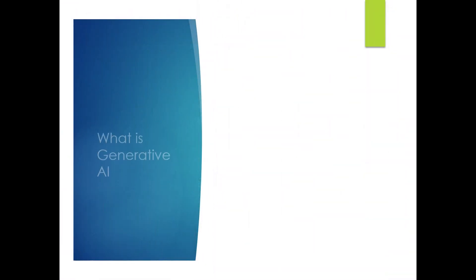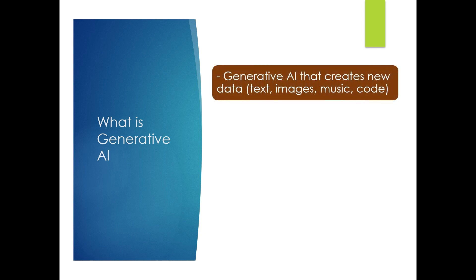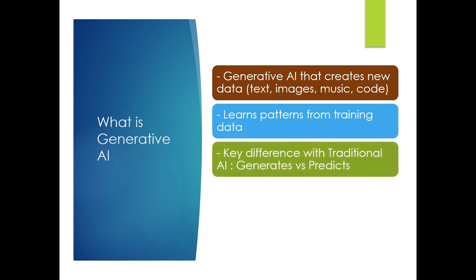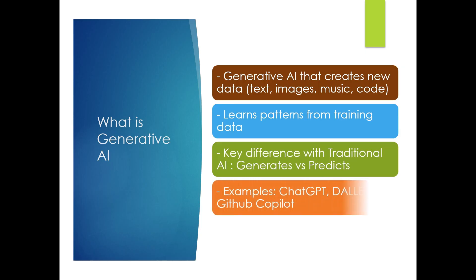The first question is: what is generative AI? Generative AI is a type of AI that creates new data like text, images, music, or even code, based on patterns it learned during training. Unlike traditional AI which predicts or classifies, generative AI actually generates new data. Popular examples include ChatGPT, DALL-E, or GitHub Copilot.